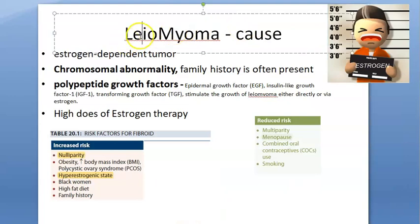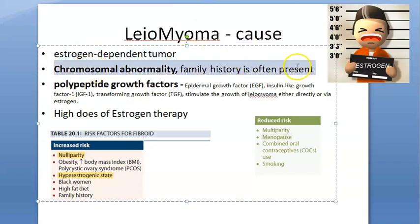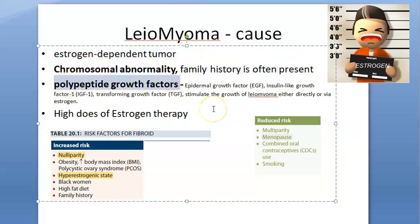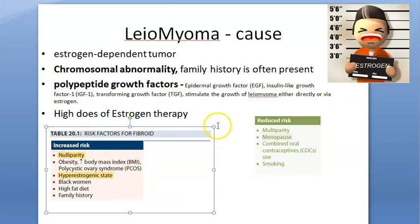Now let's look at the causes of leiomyoma. Basically it's an estrogen-dependent tumor — just blame estrogen. Some people will have family history. Growth factors like epidermal growth factor, insulin growth factor, and transforming growth factor stimulate the growth. And if they have taken high-dose estrogen therapy, they can develop leiomyoma.